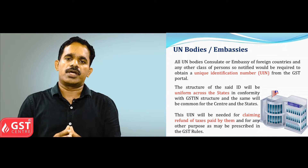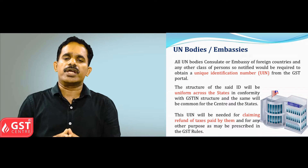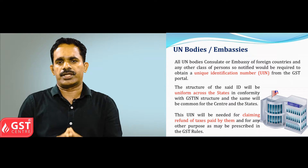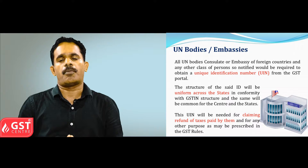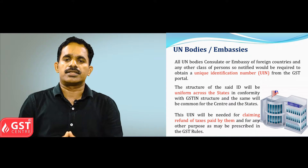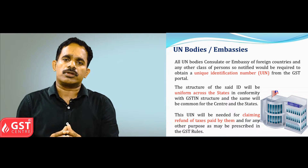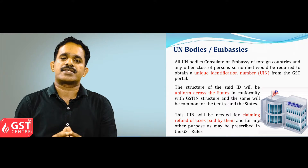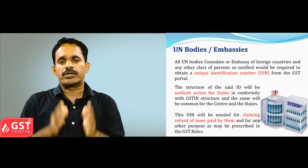For UN bodies and embassies, a unique identification number will also be issued by the tax authorities. Other than UN bodies or embassies, if there are any notified persons notified by the tax authorities under the GST law, a unique identification number will be issued to them as well in the GST common portal. The structure of this ID will be uniform across India, whether under the central government or state government. This unique identification number is required for UN bodies or embassies for claiming refund of any taxes paid by them, and can also be used for any other purposes as required under the GST law.